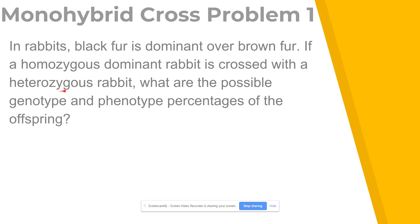The next term is heterozygous. The prefix hetero means different, so that means we are going to have different alleles — one dominant, one recessive — or in other terms, one capital and one lowercase letter. The term genotype refers to the genetic makeup of the organism, so that's where the homozygous and heterozygous terms come in handy. Phenotype represents the physical appearance of the organism — in this case, either black fur or brown fur.